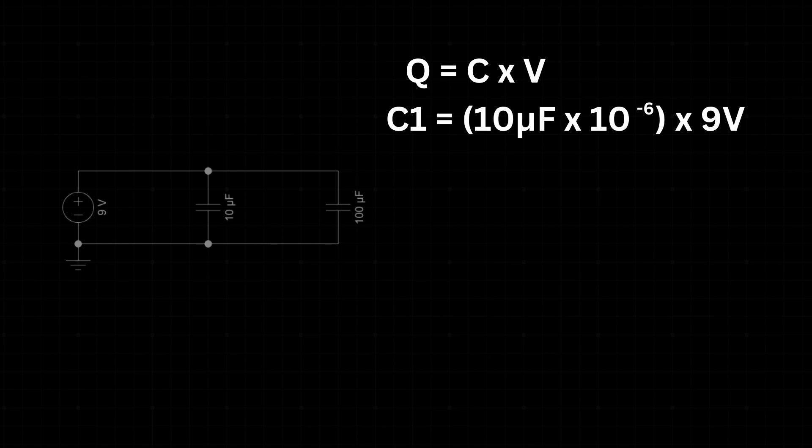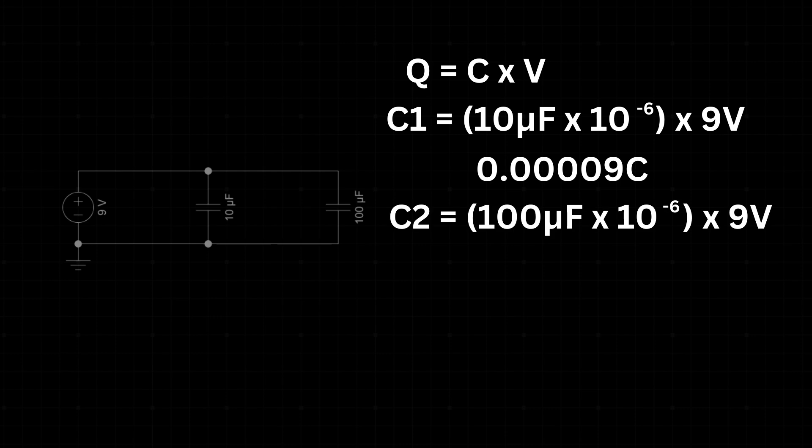For C1, that's 10 microfarad times 10 to the minus 6 since we need this value to be in farad, times 9 volts equals 0.00009 coulomb. For C2, it's 100 microfarad times 10 to the minus 6 times 9 volts equals 0.0009 coulomb. Adding these together, the total charge stored in the circuit is 0.00099 coulomb.